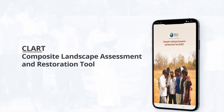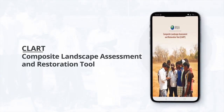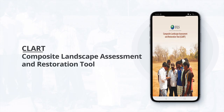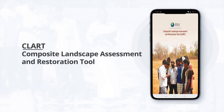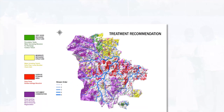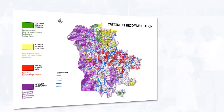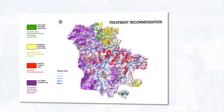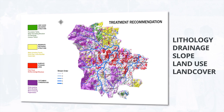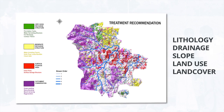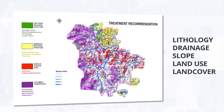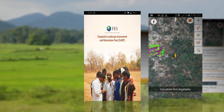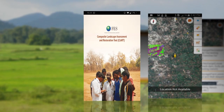CLART, or the Composite Landscape Assessment and Restoration Tool, translates scientific recommendations through color-coded maps that depict recharge potentiality by overlaying layers of lithology, drainage, slope, land use, and land cover. While downloading the CLART mobile application,